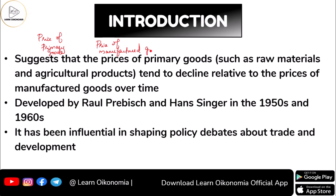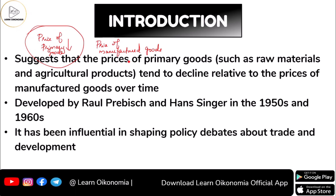We are going to compare these two things. As per this hypothesis, it has been suggested that the price of primary goods would tend to decline relative to the prices of manufactured goods over time. Primary goods include raw materials and agricultural products, while manufactured goods refer to industrial goods.